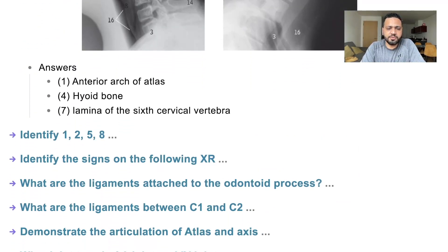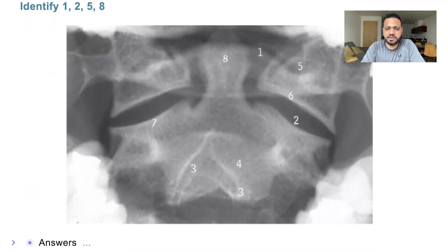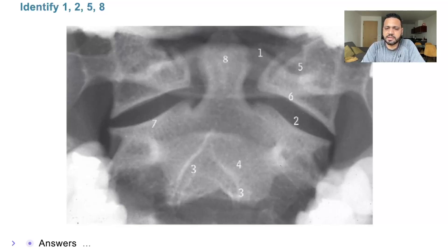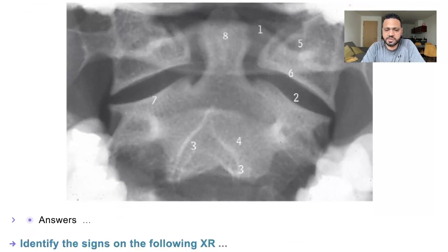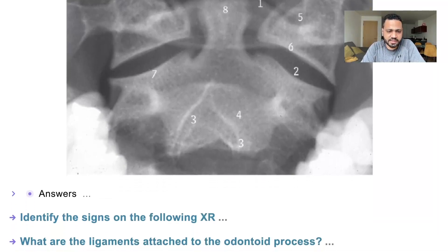We need to identify 1, 2, 5, and 8. This is an open mouth view. Number 8 is the odontoid peg. Number 1 is the anterior arch of the atlas. Number 5 is the lateral mass of the atlas. Number 6 is the inferior articulating facet of the atlas. Number 2 is the atlanto-axial joint. Number 7 is the superior articulating facet of the axis. Number 3 is the bifid spinous process. And number 4 is the axis.